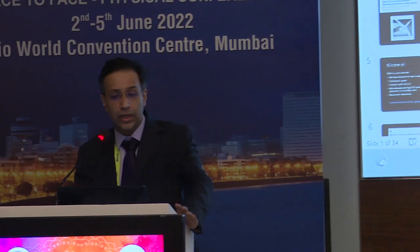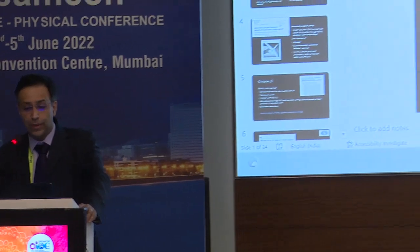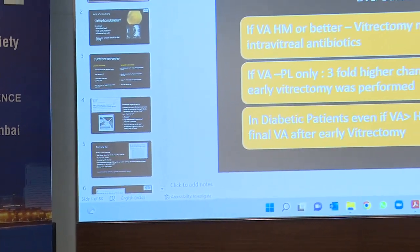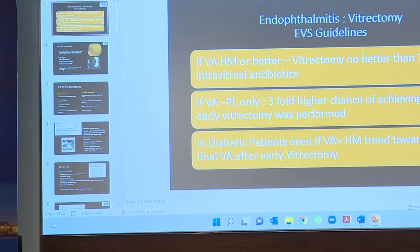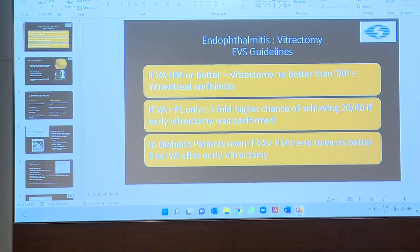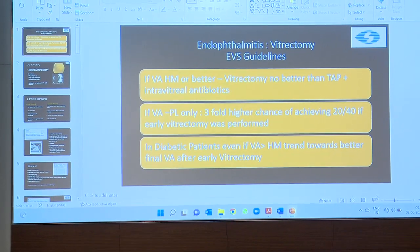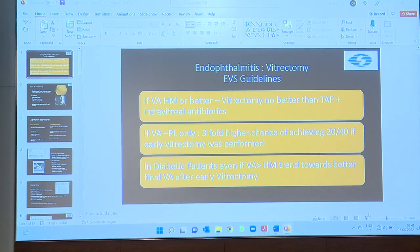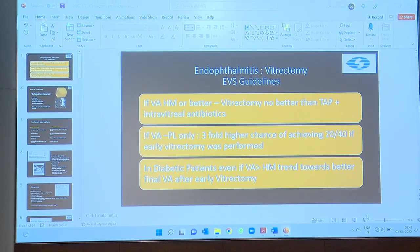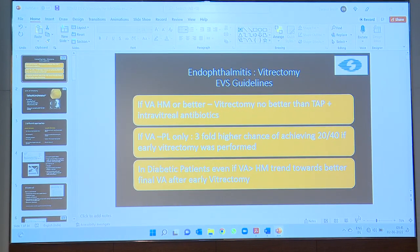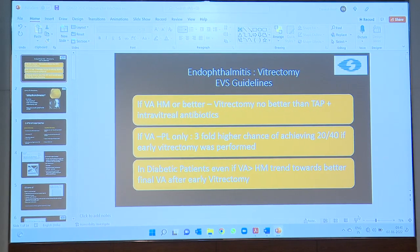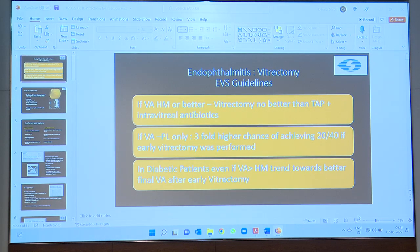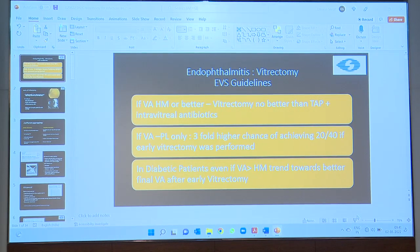The title slide is not coming so we'll skip that. Vitrectomy in infectious endophthalmitis: we have very clear guidelines from the EVS. These are the classical guidelines that if vision is hand movements or better, vitrectomy is no better than a tap. If vision is PL only, there's a much better chance of getting good vision with early vitrectomy. In diabetic patients there's a trend that early vitrectomy leads to better visual results.